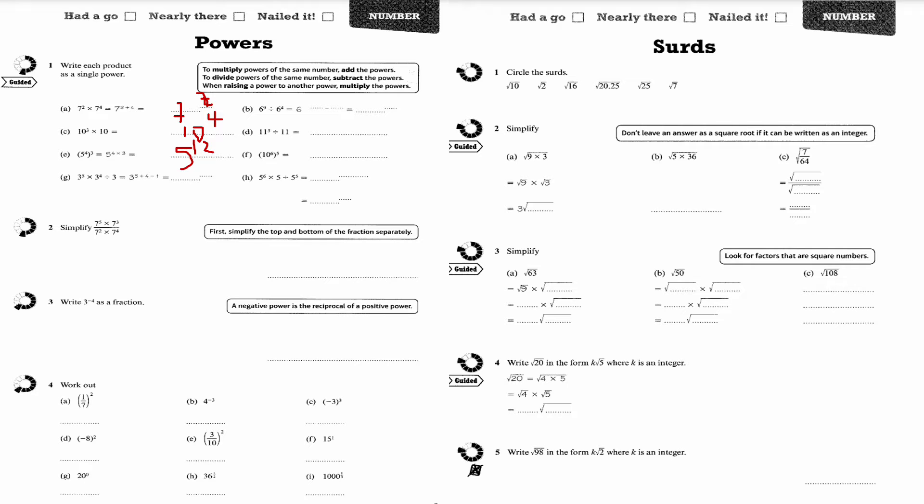Part B, 6 to the 9 divided by 6 to the 4. We're going to subtract the powers, providing the bases are the same. 6 to the 9 take away 4 is 5, so it's 6 to the power of 5. 11 to the 5 divided by 11, imagine that I've got 11 to the power of 1 there. So I subtract the powers. 5 take away 1 is 4.